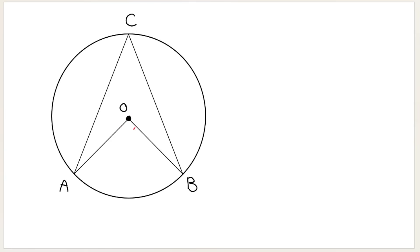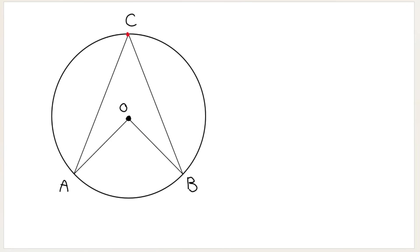This angle here is the angle at the center — the center is over here, and this is called angle at center. That angle will always be double this angle over here, which we refer to as angle at circumference. Both of these angles come from or are created by the same two points on the circumference.